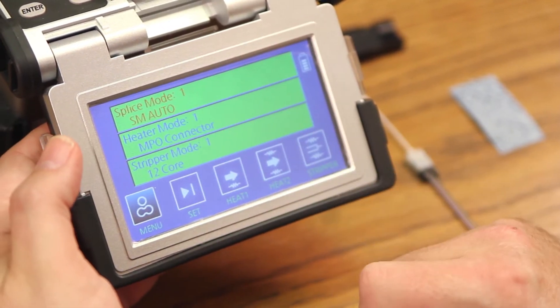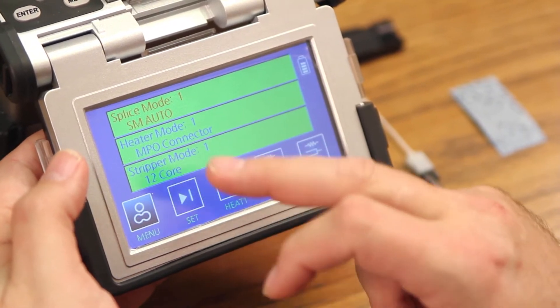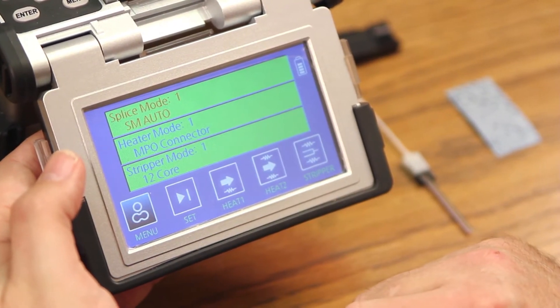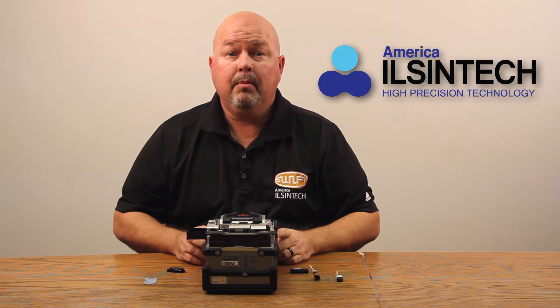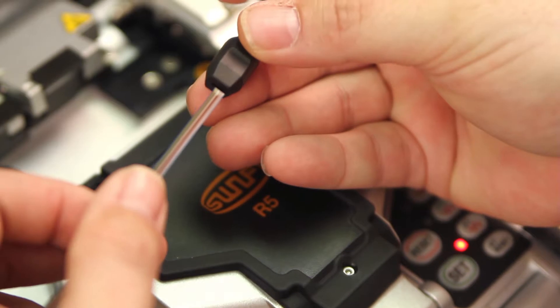Now you'll see the mode has changed to single mode. Doing an MPO connector, 12-fiber. Now, prep your cable. First, put your back boot on.